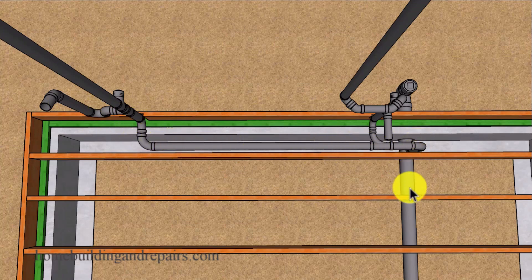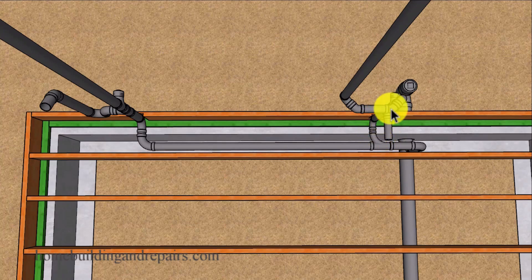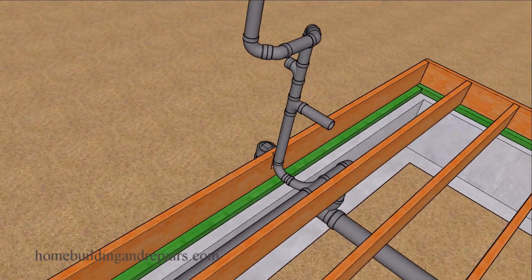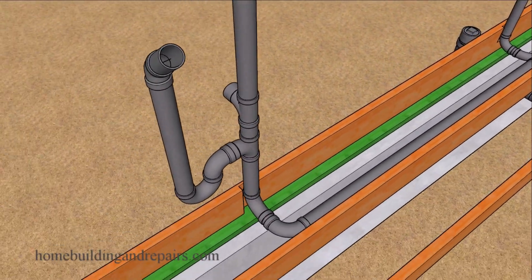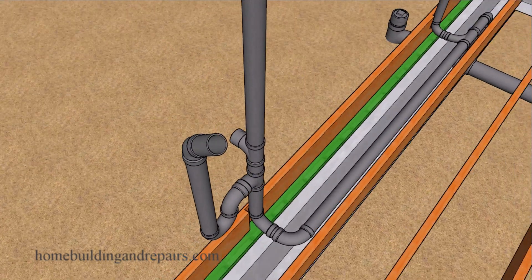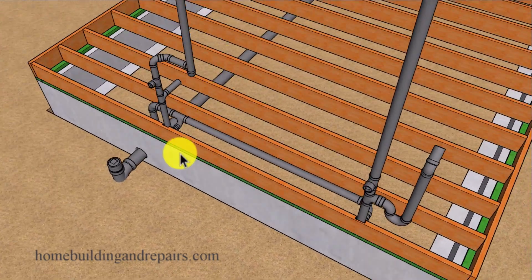Next let's look at the wash machine drain line — two inches running all the way to the drain line, then a two-inch combo with a one-and-a-half-inch fitting coming up for the kitchen sink. You can always upsize that to two inches going up to the kitchen sink. Then we have an inch-and-a-half vent and a two-inch vent going up. You can see where we're going to have to notch one of the rafters, the same way we notched some of the joists to install our plumbing pipes.